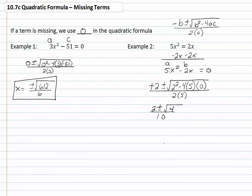We can take the square root of four, so we now have two plus or minus two, all over ten.